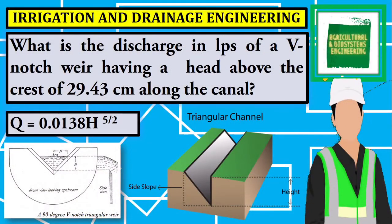Welcome to the Agricultural and Biosystems Engineering tutorial channel. This time I will be solving a problem under irrigation and drainage engineering: what is the discharge in liters per second for a V-notch with a head above the crest of 29.43 centimeters along the canal?